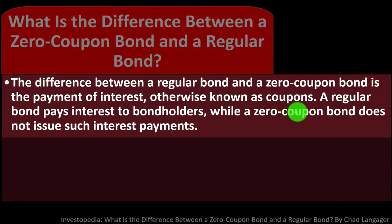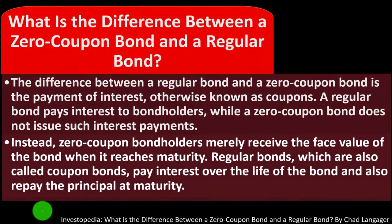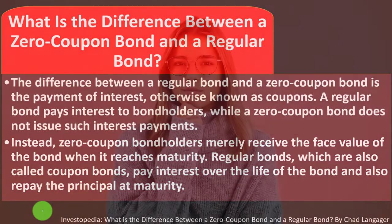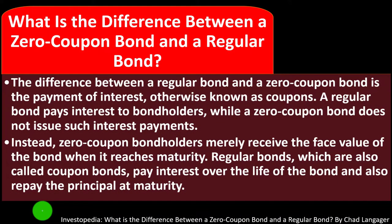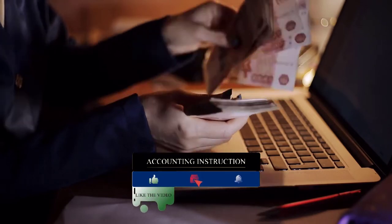A regular bond pays interest to bondholders while a zero coupon bond does not issue such interest payments — you're not going to get those regular interest payments. Instead, zero coupon bondholders merely receive the face value of the bond when it reaches maturity. You might ask: why would I buy a bond where I'm not getting regular interest payments? Because you're buying the bond at a discount, and when you receive the face amount at maturity it will typically be more than you paid for it — you are in essence getting the interest at the point of maturity.